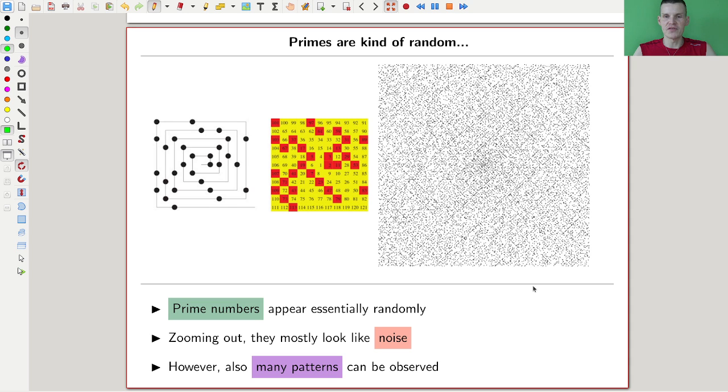The prime numbers essentially appear randomly. Here's my illustration of the prime numbers. Just don't try to look for patterns. That's the whole point. Prime numbers pop up randomly. You will not see any nice patterns here. Prime numbers, and when you zoom out they mostly look like noise. That's how I imagine noise would look like.